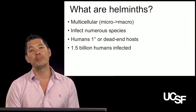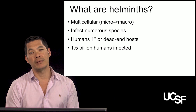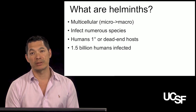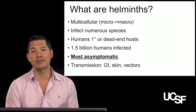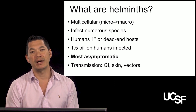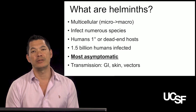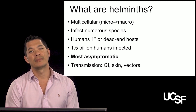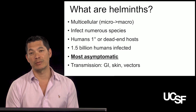Helminths are a huge problem — 1.5 billion humans are thought to be infected, with some parasites being more important than others. The main point is that most people are asymptomatic when they have a helminth infection. There are many people walking around with worms and they don't know it. Unless you're immunocompromised or the worm burden reaches a critical level, you may not even recognize that you have an infection.